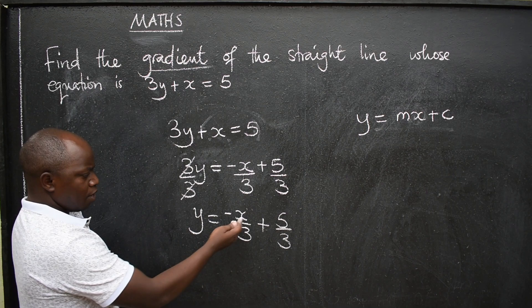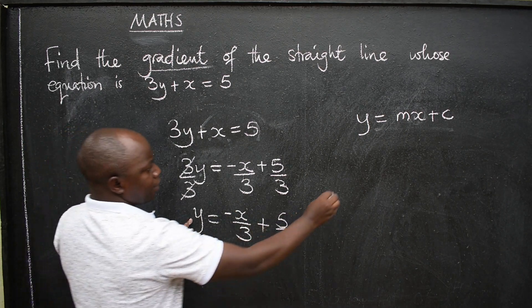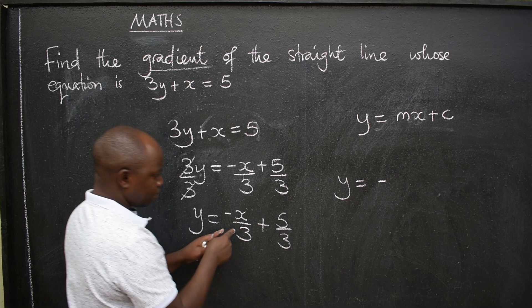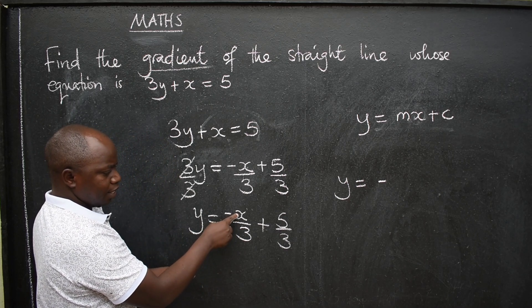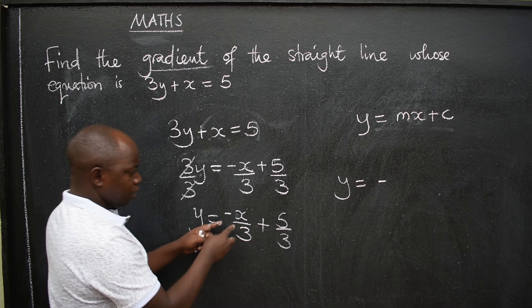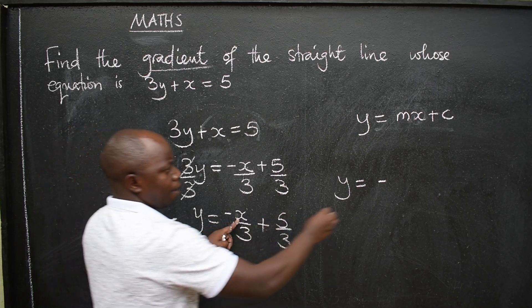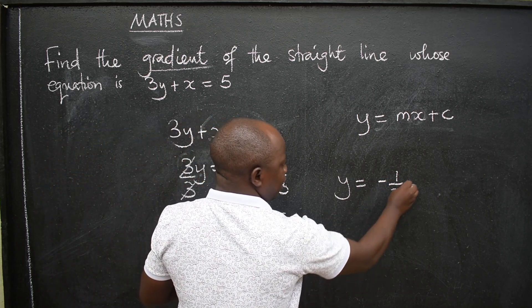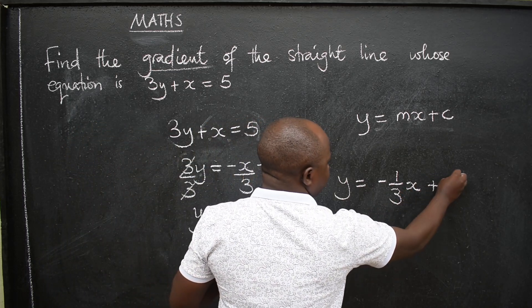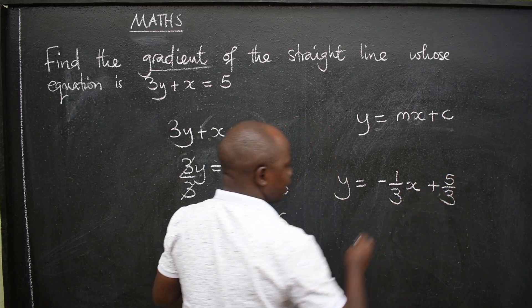Now look at what we have here. It is y = negative. I can push this x to the back here like the way it is here. So what number will remain here? There will be a -1/3 x. I can write it in that way. Then +5/3 like that.